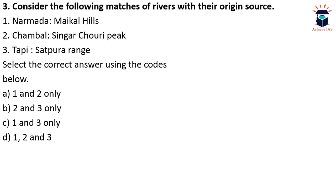The next question asks to match rivers with their origin sources: first, Narmada — Maikal Hills; second, Chambal — Singharp Chori Peak; third, Tapti — Satpura Range. All of these are correctly matched. Narmada originates from the Maikal Hills, specifically the Amarkantak Plateau. Chambal originates from Singharp Chori Peak, which is on the northern escarpment of the Vindhyan range. Tapti originates from the Satpura range.